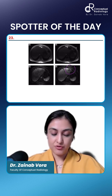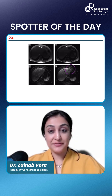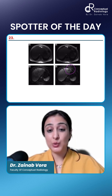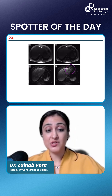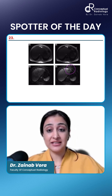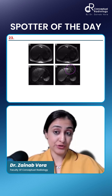There is a mass which you can see here. Is it fat sparing? Is this the location of fat sparing? What is this segment? This is segment 2 and 3 of the liver. Why will there be fat sparing in segment 2 or 3?